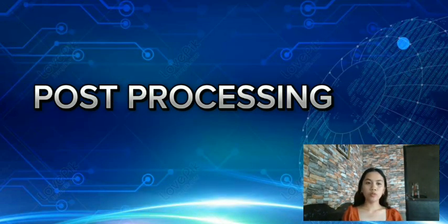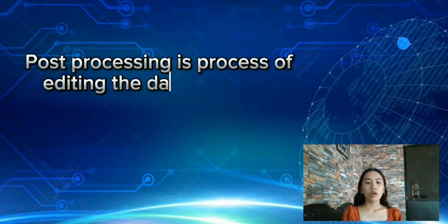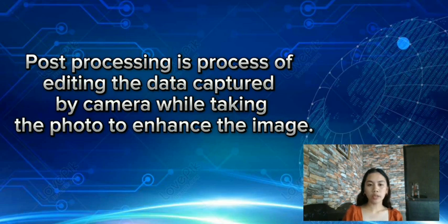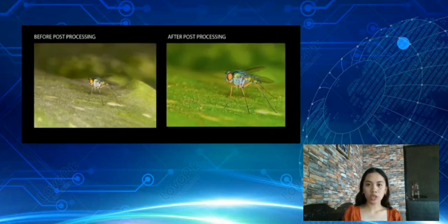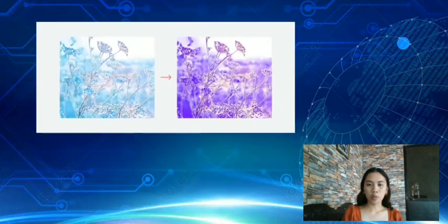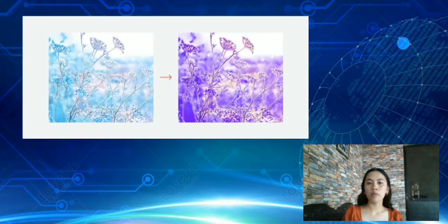Now let's move on to post-processing. Post-processing is the process of editing the data captured by a camera while taking the photo to enhance the image. It encompasses every change you make to a video or photo after you download the file to your computer. It's the process that takes unrefined images and polishes them into perfect captures. The fundamentals of post-processing include everything from cropping to sharpening.